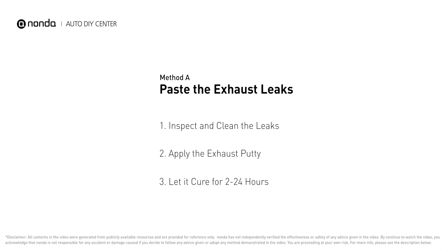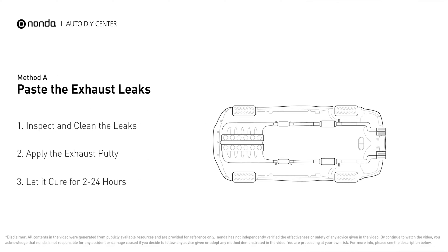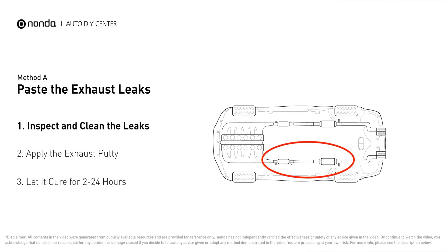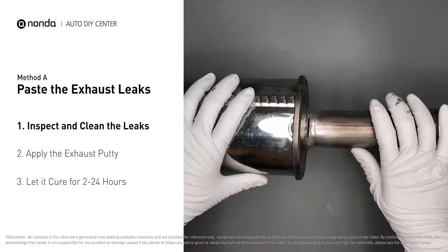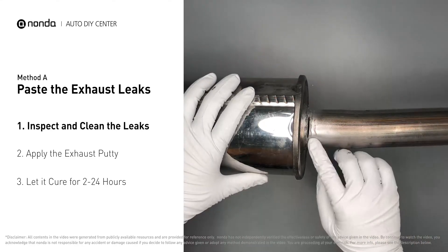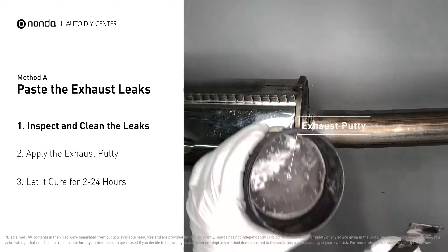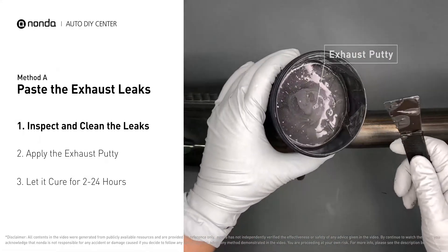Method A: paste the exhaust leaks. The exhaust system begins at the engine combustion chambers and runs along the undercarriage of the vehicle, eventually ending with a visible tailpipe. If you have a leak around the joint, get some exhaust putty to seal it up.